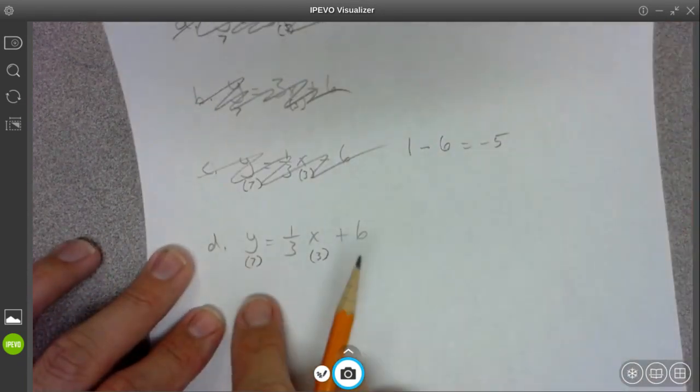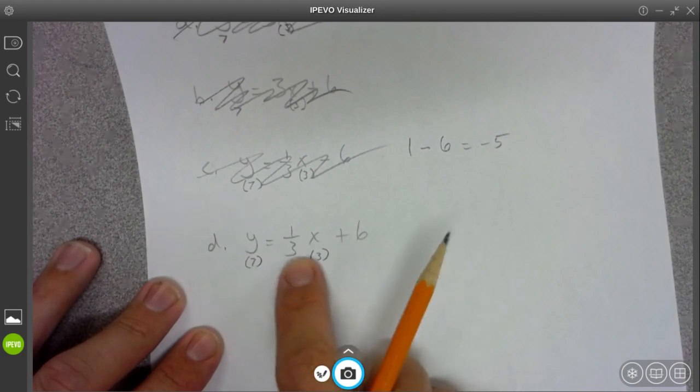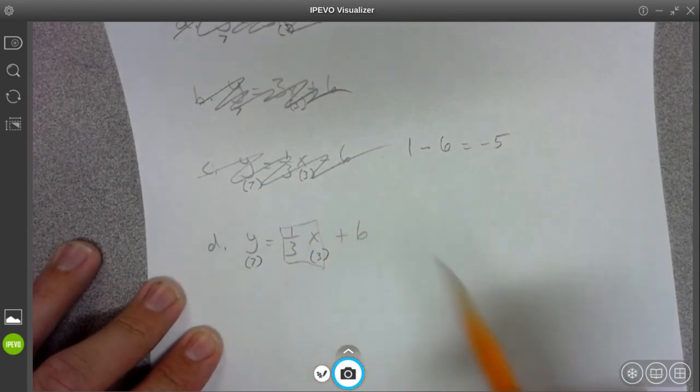Oh man. So it's got to be D. You know, this is equal to one, this part. And then one plus six, that is equal to seven.